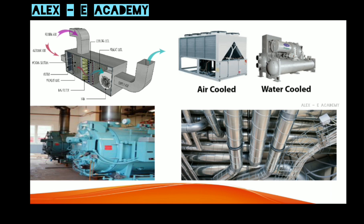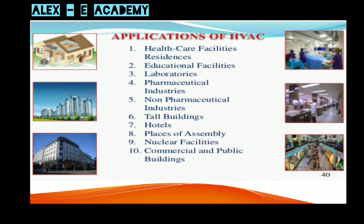The fourth component is ducts. In a centralized AC system, ducts are provided so that conditioned air reaches all directions. For application, HVAC systems are used for commercial, residential, and industrial purposes.